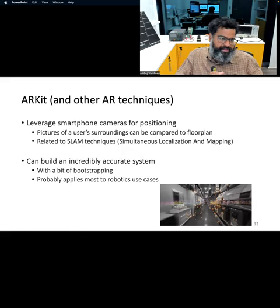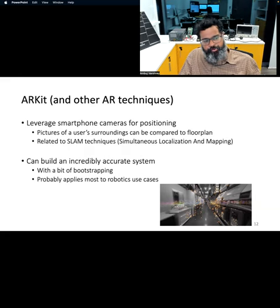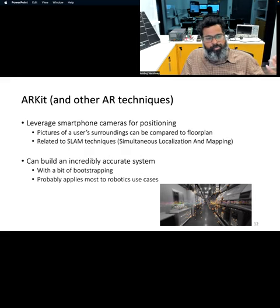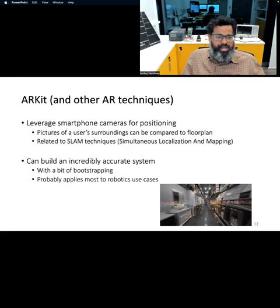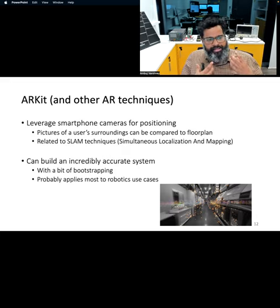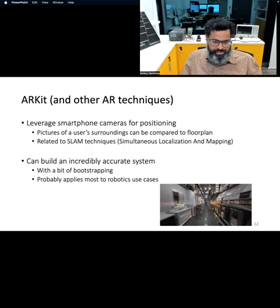With the interest around things like the metaverse, augmented reality can also help you localize. We use QR codes quite a lot in the environment here for making payments, but in a similar way, we can have QR codes embedded in the environment. You can then use the camera on your smartphone to take a picture and get a rough idea about where you are, because these QR codes can embed information about your location in a building, for example.